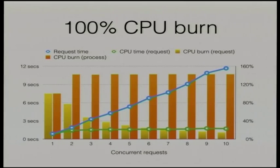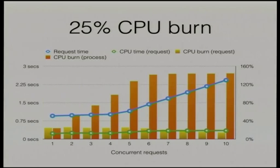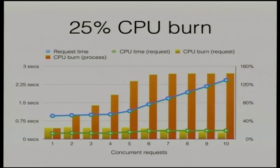What if we change the test so that it is still performing some CPU bound work, but for a large part of the time is IO bound instead? Winding back the amount of CPU bound work being performed such that the per-request CPU burn was equivalent to about 25%, we see that initially the request time stays relatively stable as the number of concurrent requests increases, only increasing a slight bit. When we hit five concurrent requests, however, we again see an increase in request time, with overall process CPU usage eventually reaching that plateau at 150%.